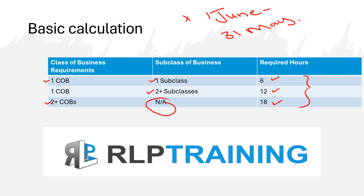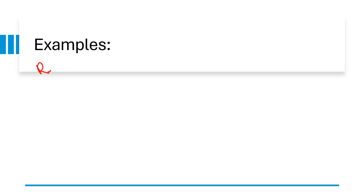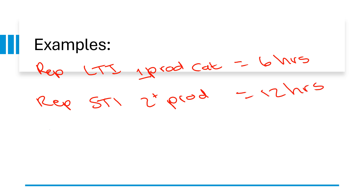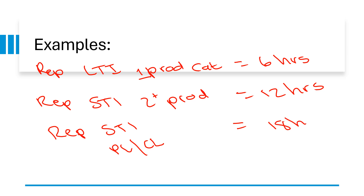It's quite simple and straightforward. For example: a representative appointed under long-term insurance, one product category, only needs to complete 6 hours of CPD. A representative appointed under short-term insurance for two or more product categories requires 12 hours. Or a representative appointed under short-term insurance personal lines and commercial lines — two different classes of business — requires 18 hours. Nothing complicated here; it's just memorizing it.